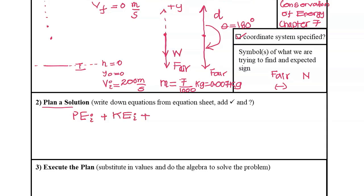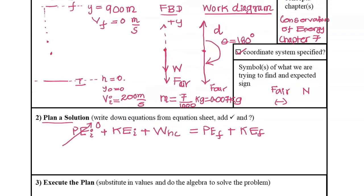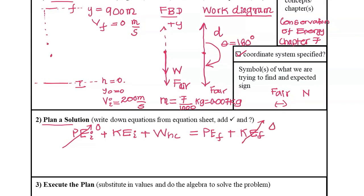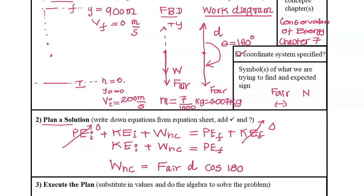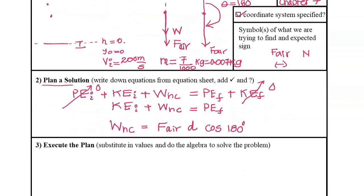The conservation of energy equation is: initial potential energy plus initial kinetic energy plus work done by non-conservative forces equals final potential energy plus final kinetic energy. Initial potential energy is zero because the initial height level is zero. Final kinetic energy is also zero because that's the turning point — velocity is zero there. Work done by non-conservative forces equals the force of air resistance times the magnitude of displacement times cosine of 180 degrees.